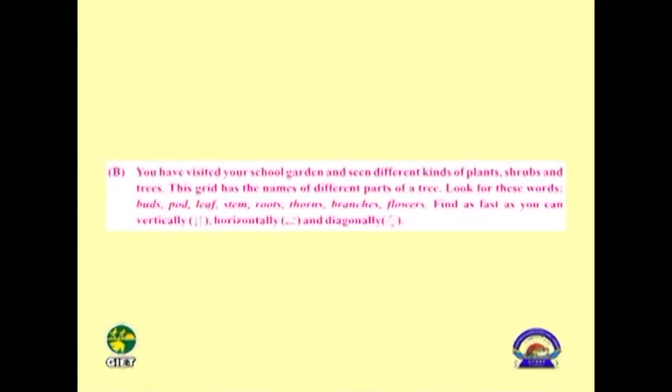This activity is very interesting. You have to carefully observe parts of trees. Students, take your textbook and pencil, sit attentively, and listen carefully to the words said. Try to find those words in the crossword box. If you can find them in the given time, that is wonderful — if not, don't worry, the spelling will be shown on screen with a red border. So let's start Activity 6b.